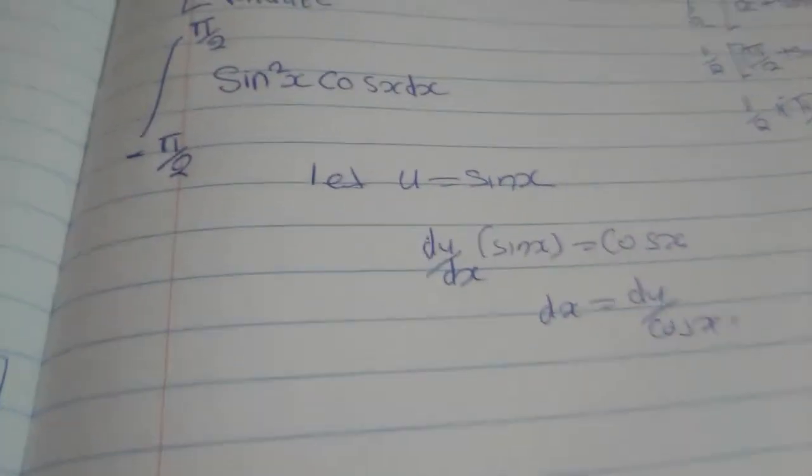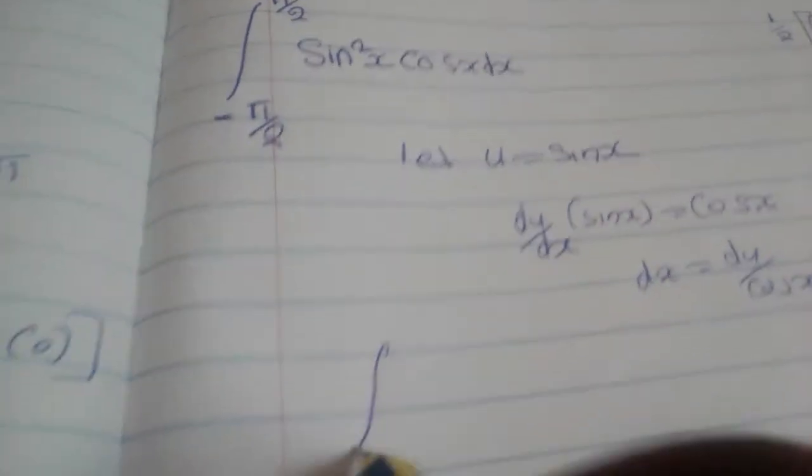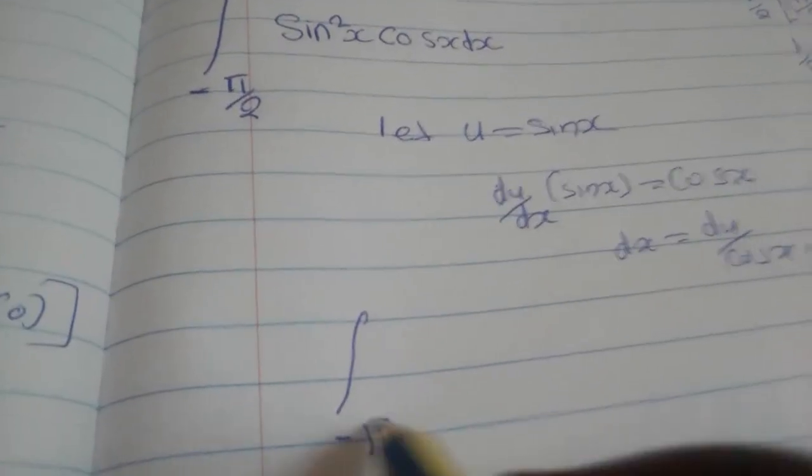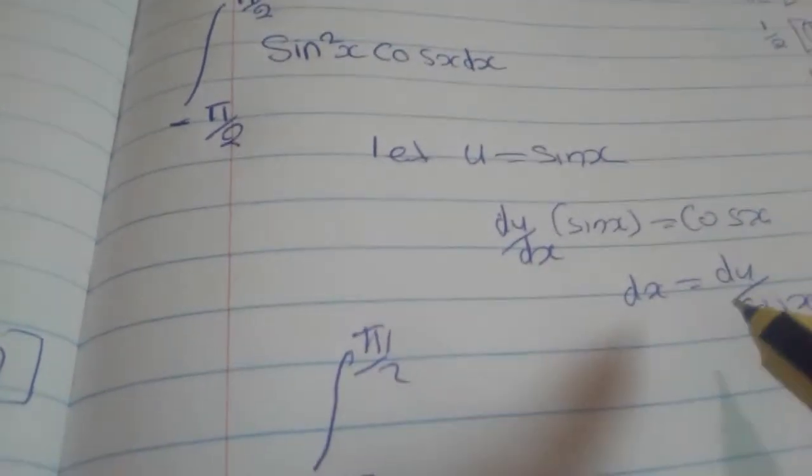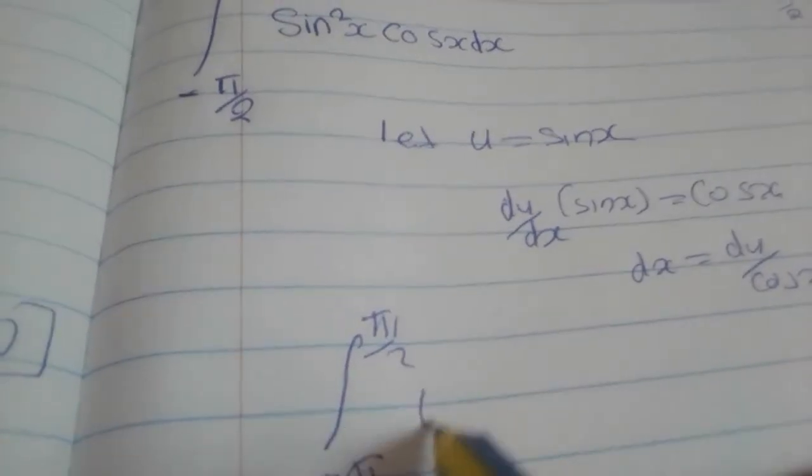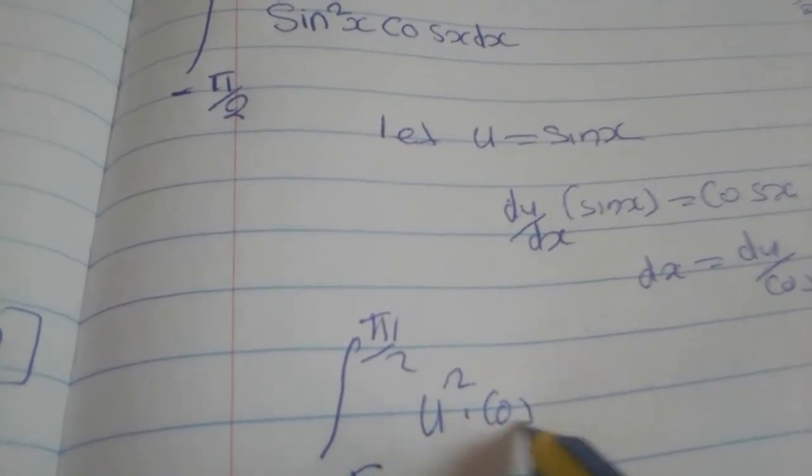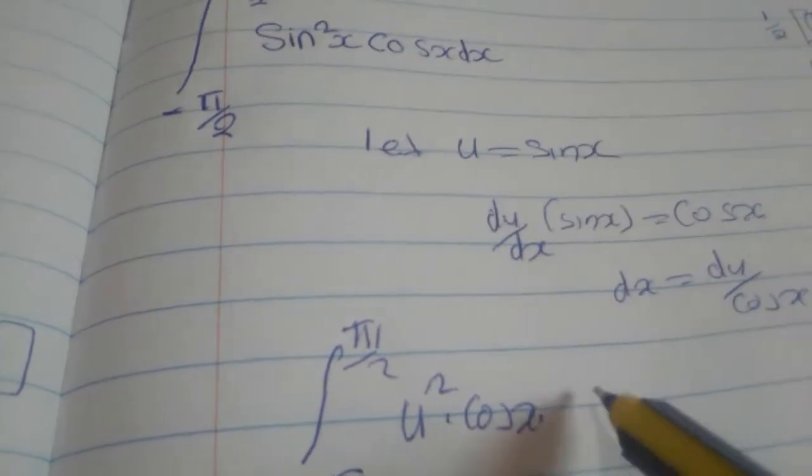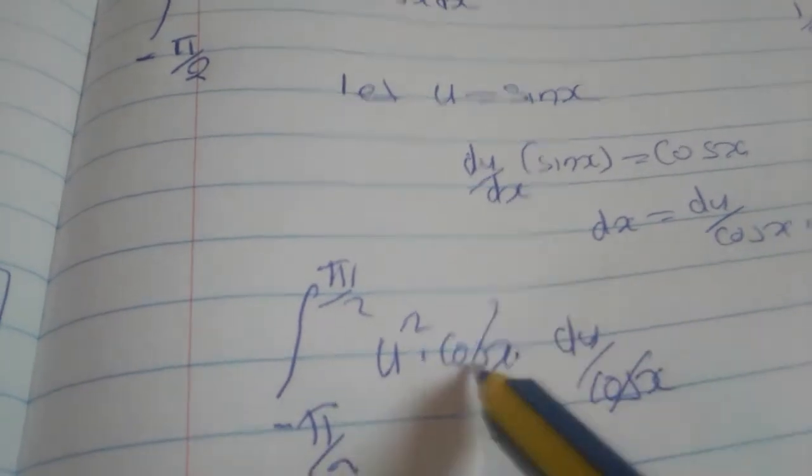For this one you are going to substitute it from this equation. So you are going to say from negative π over 2 to π over 2, u equals sin x, but sin x squared here, so you are going to get u² times cos x times du over cos x. So this cos x will cancel with that cos x.